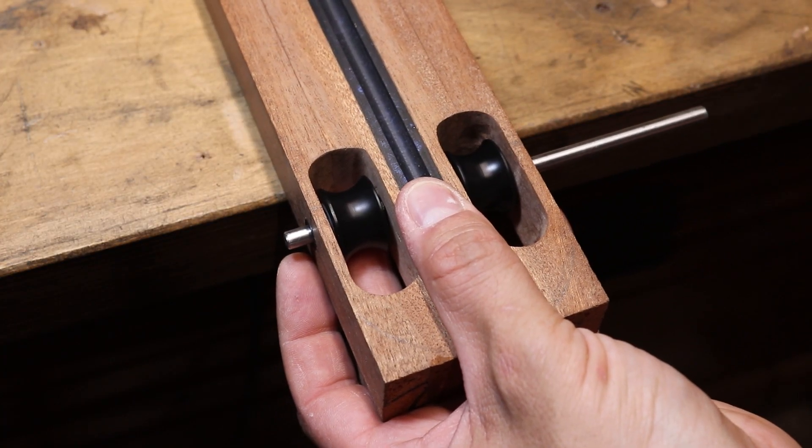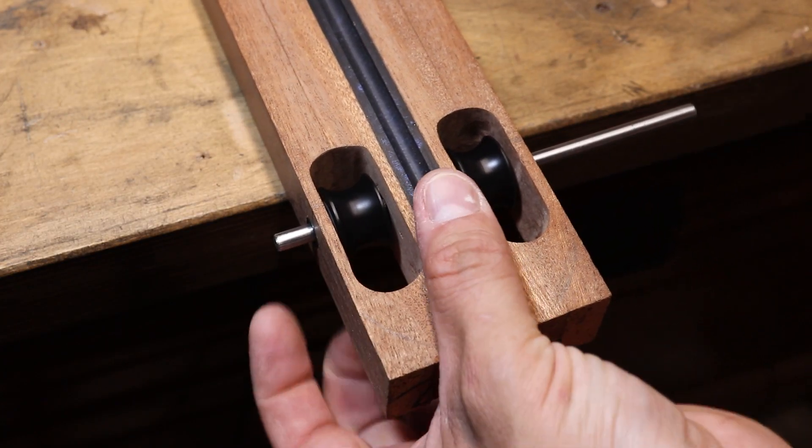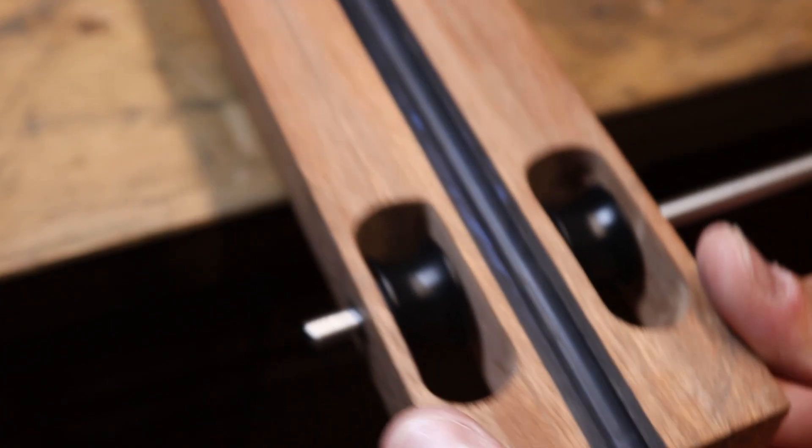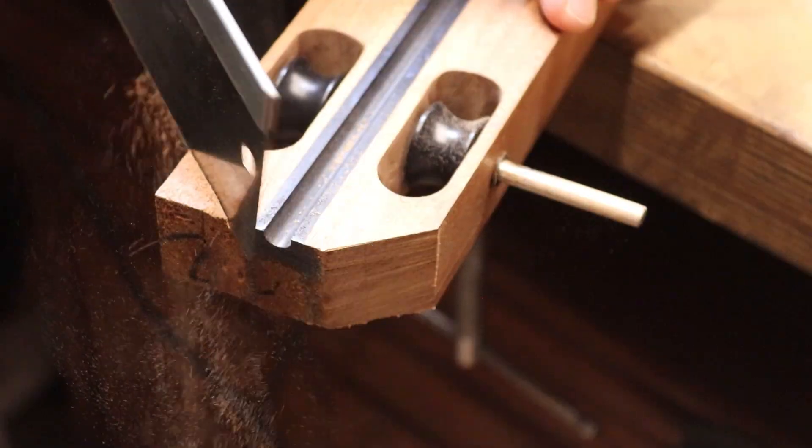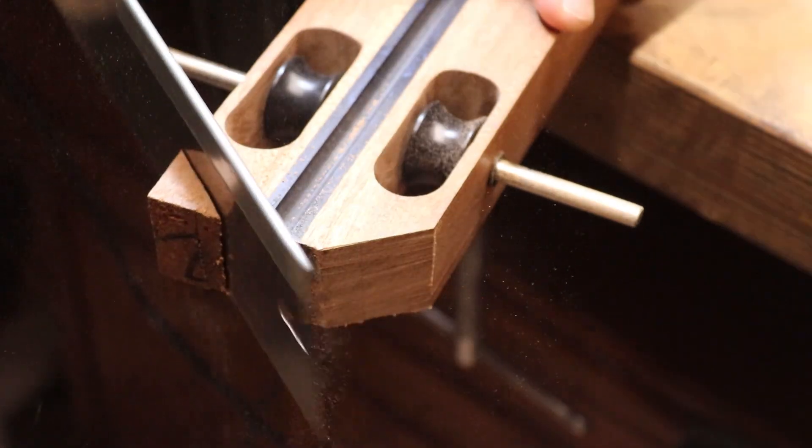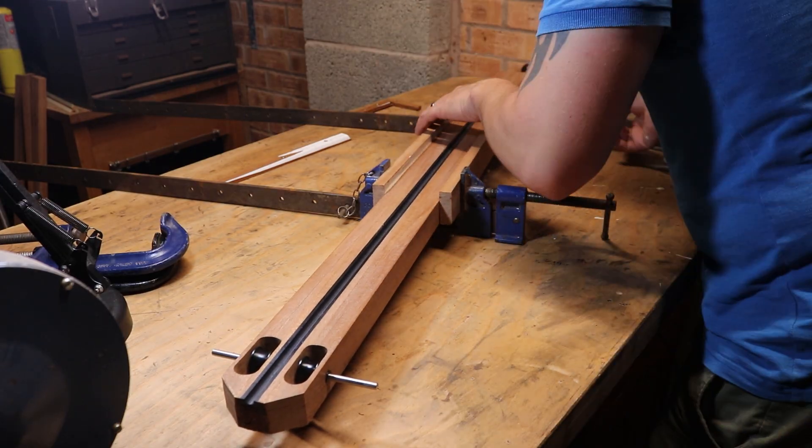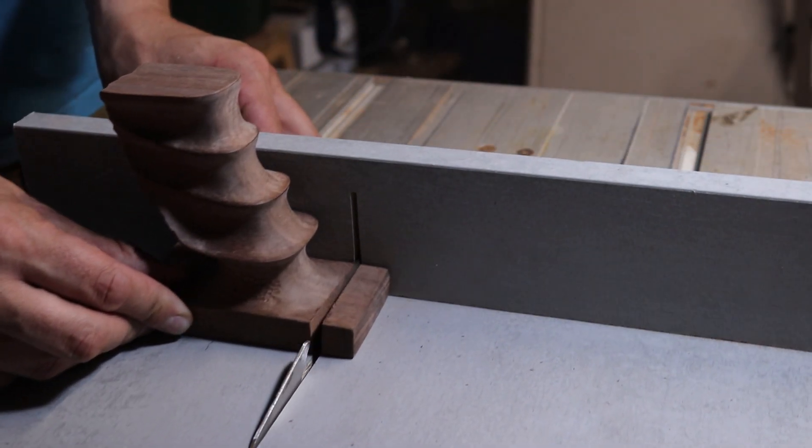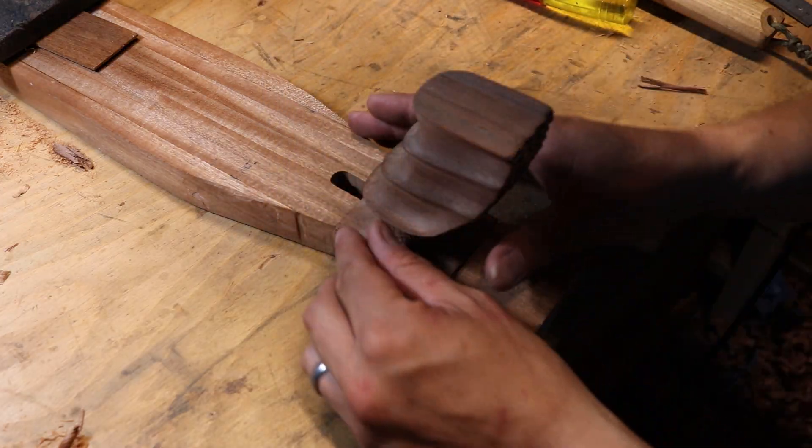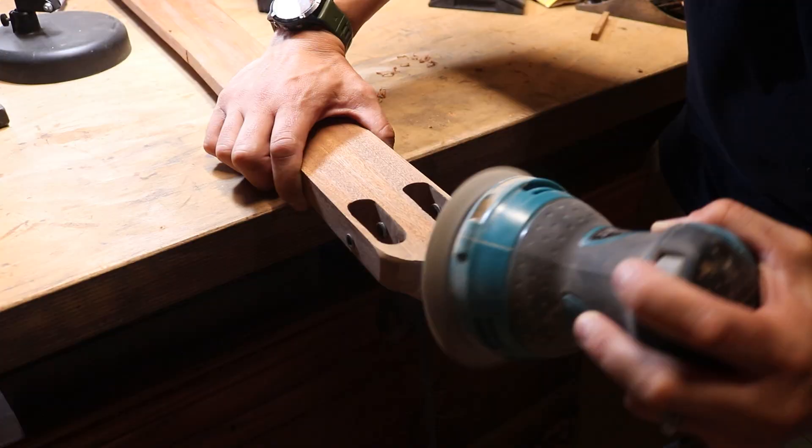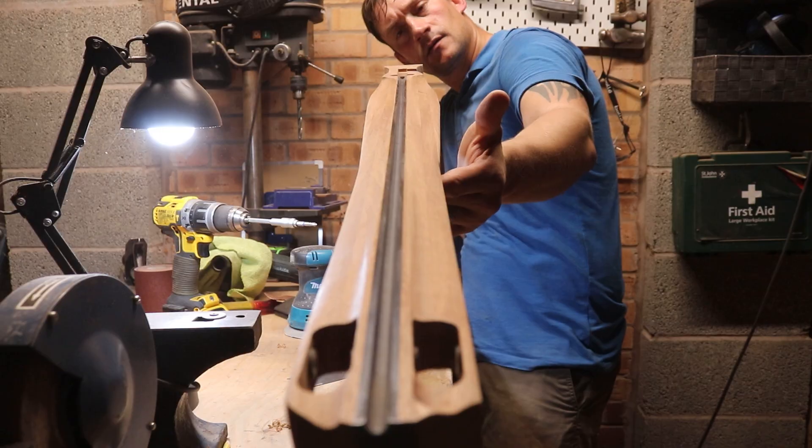A couple of taps with a hammer to get the axis pin through, and that's the roller assembly complete. With the roller assembly complete, that concludes the second part of my spear gun build. Next time, make sure you come back for part 3, where I'm going to be attaching the handle to the blank, and doing all of the shaping to make this thing look like an actual spear gun. See you then.